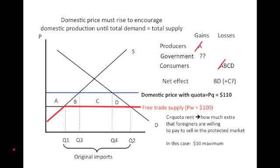An important part of this story is what's called a quota rent. A quota rent is the difference between what foreigners were willing to bring this product into the market for and what they're allowed to get if they're able to sell within this protected domestic market. If a foreigner gets a license and sells inside the domestic market, they sell it for $110. If they sell the same product anywhere else in the world, it's $100. The difference of $10 is the quota rent — the foreigner would be willing to pay up to $10 to get access to this protected domestic market, though they'd prefer to pay nothing and pocket the extra profits.